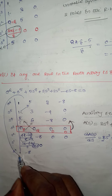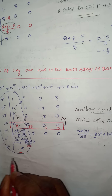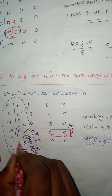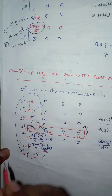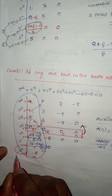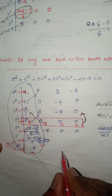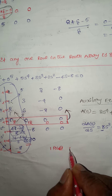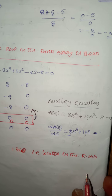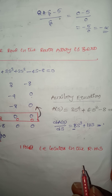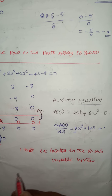Observing the first column of the Routh array: 1, 1, 2, 8, 3, 33.33, −8. The signs are positive, positive, positive, positive, positive, positive, negative — so there is only one sign change. That means there is only one pole located in the right half of the s-plane, and the system is unstable.